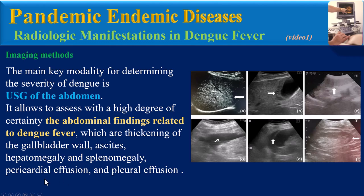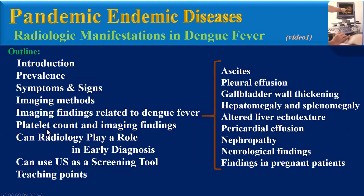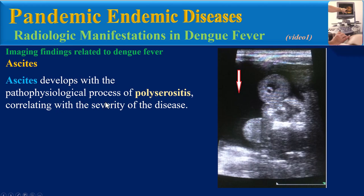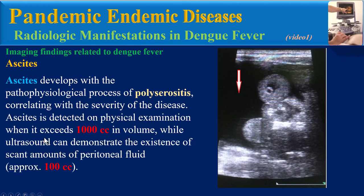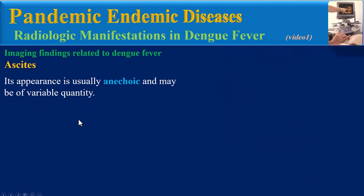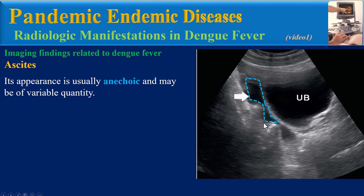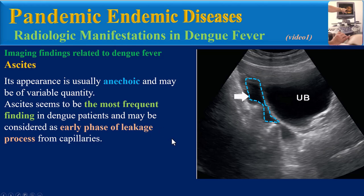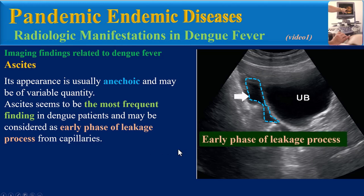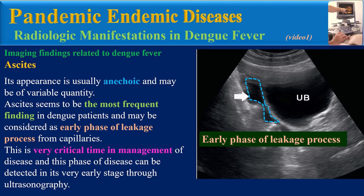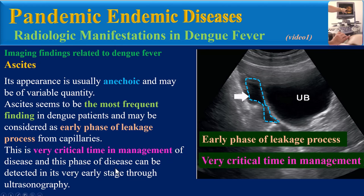Ascites develops through the pathophysiological process of polyserositis and correlates with the severity of the disease. Ascites is detected on physical examination when it exceeds 1000 cc in volume, while ultrasound can demonstrate scant amounts of peritoneal fluid of approximately 100 cc. Its appearance is usually anechoic and may be of variable quantity. Ascites is the most frequent finding in dengue patients and may be considered an early phase of the leakage process from capillaries — a critical time in disease management detectable at its earliest stage through ultrasonography.